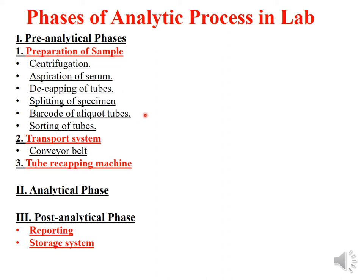Further steps include barcoding of aliquot tubes and sorting of tubes as per the codes given. The second pre-analytical phase includes the transport system, where samples are transported by a conveyor belt.